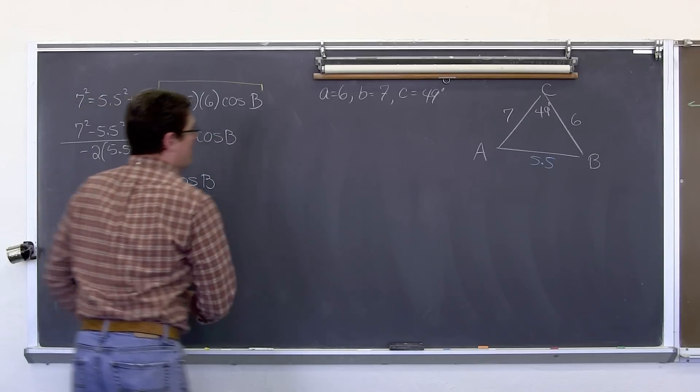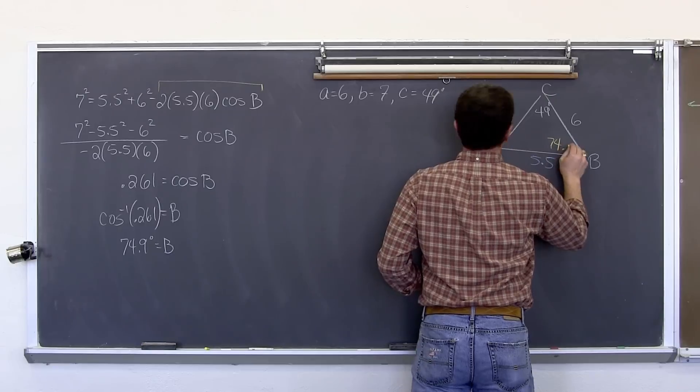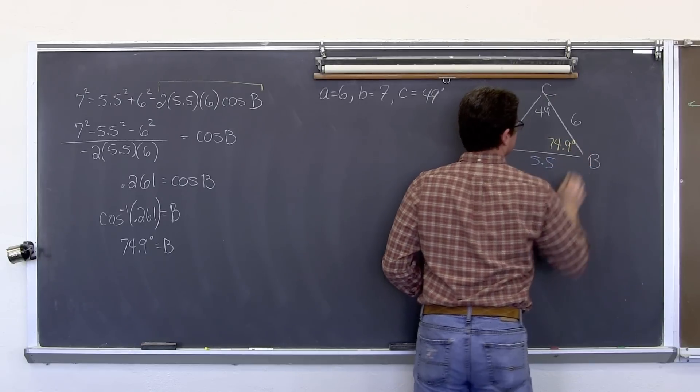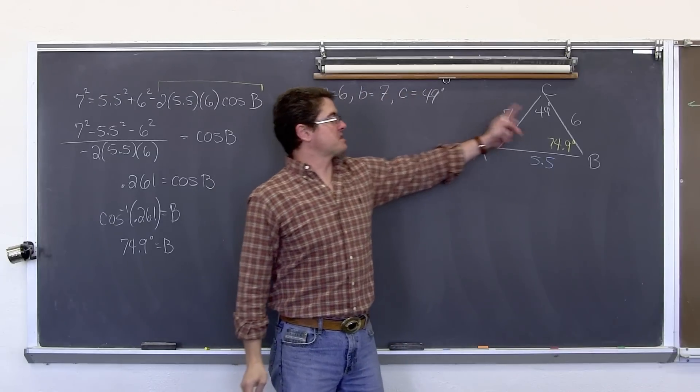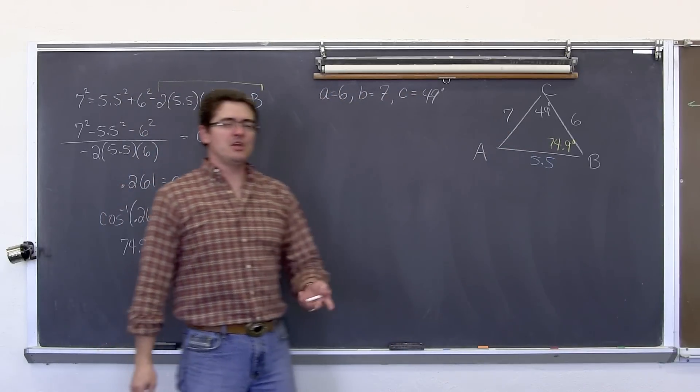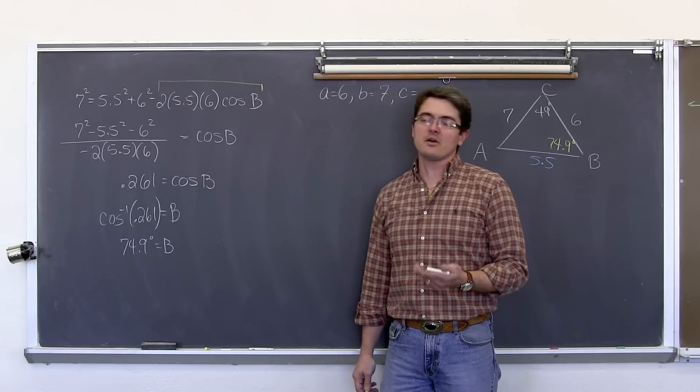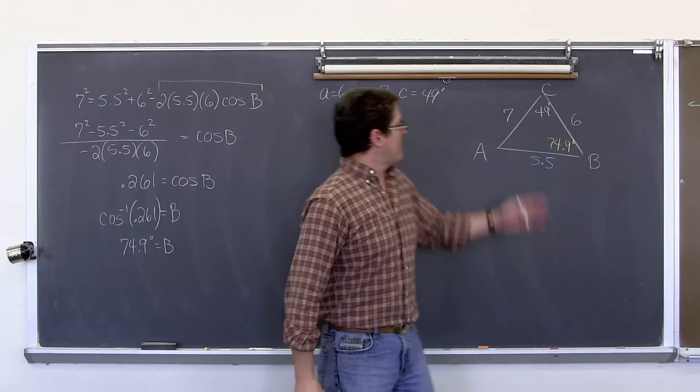Okay. So angle B is 74.9. So this is our largest side, so this should be our largest angle. If it is not, we have made a mistake. It turned out to be acute, so we could have done law of sine, but again, we didn't necessarily know that ahead of time.